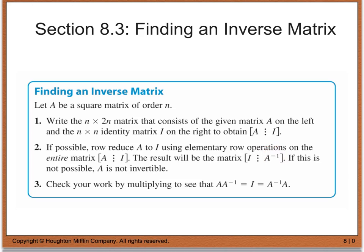If you cannot reduce the left-hand side down to the identity matrix, then we say A is not invertible. You can always check your work by multiplying A times A inverse and A inverse times A — you should always get your identity matrix.